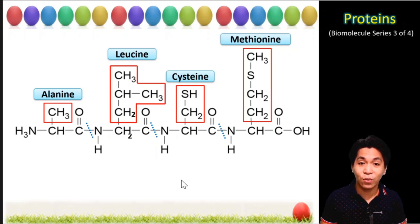So how do we name this sequence? We can name them using the complete names of the amino acids alanine, leucine, cysteine, and methionine. We can also name them using their three-letter abbreviation or their one-letter symbol.